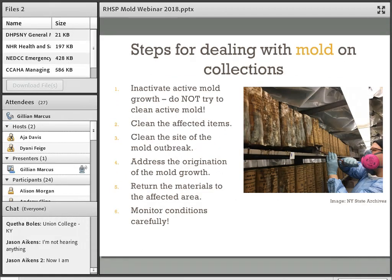If you have a fairly small outbreak, there are several ways to deal with it in-house. First, you want to inactivate active mold growth — you should never try to clean active mold because you'll just end up embedding it deeper into paper fibers and spreading it to other areas. The site of the outbreak must also be thoroughly cleaned — all surfaces, floors, and any area that may have come into contact with active mold. And critically, stabilizing and cleaning moldy materials is only half the battle: if you return them to an environment conducive to mold growth, you will end up with the same problem again.